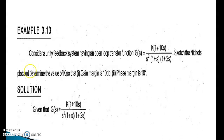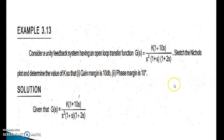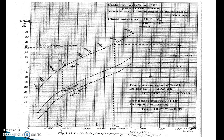Example: Consider a unity feedback system having an open loop transfer function G(S) = K(1 + 10S) / [S²(1 + S)(1 + 2S)]. Get the Nichols plot and determine the value of K so that the gain margin is 10 dB and the phase margin is 10 degrees. Given G(S) = K(1 + 10S) / [S²(1 + S)(1 + 2S)].